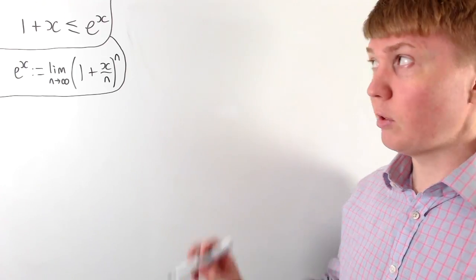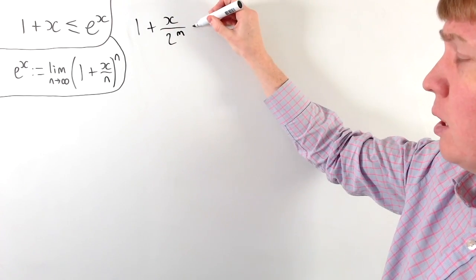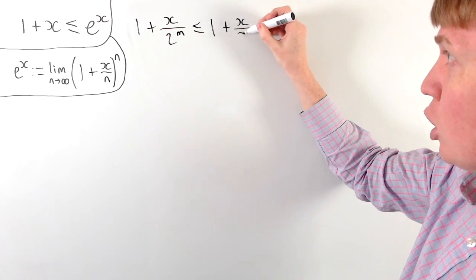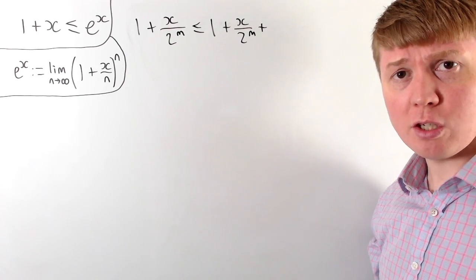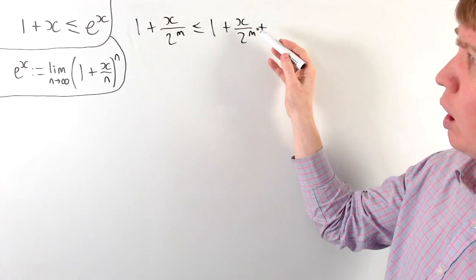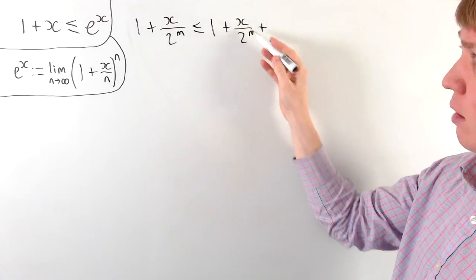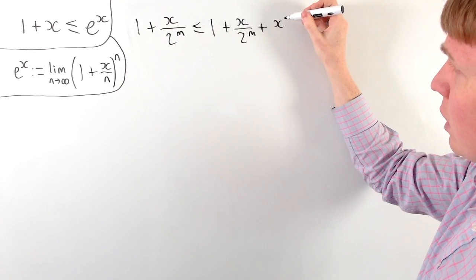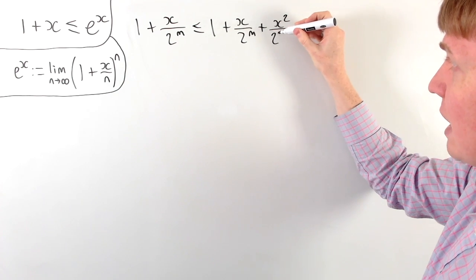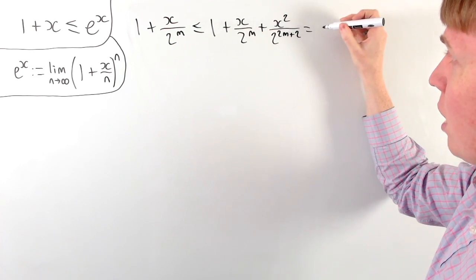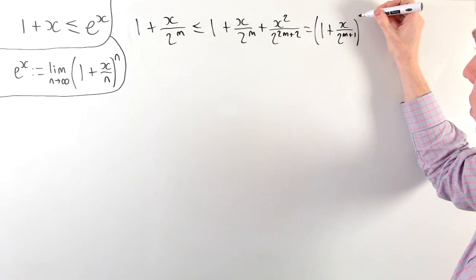At each step this relies on having 1 plus x over some power of 2 — let's call it 2 to the power of m. We know that this is less than or equal to 1 plus x over 2 to the m plus anything squared, for any real number x. We take half of x over 2 to the m, which is x over 2 to the m plus 1, and square it to get x squared over 2 to the 2m plus 2. You can check this factorises into 1 plus x over 2 to the power of m plus 1, all squared.